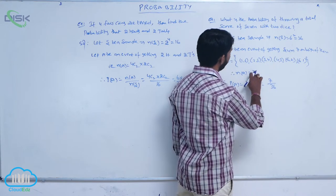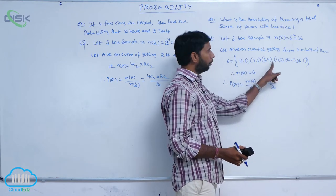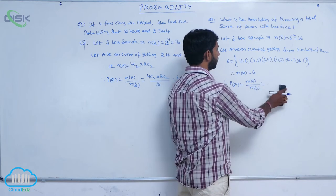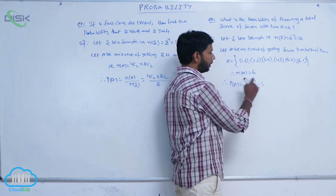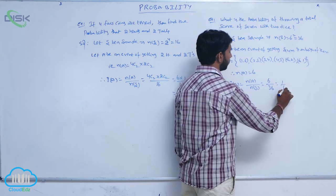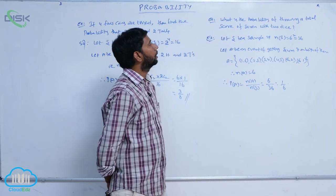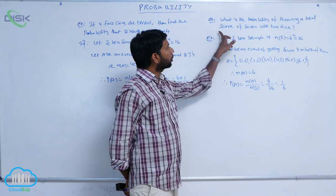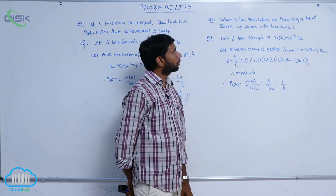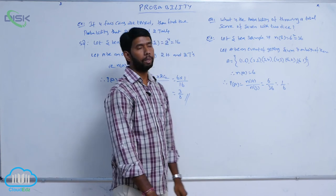Here n(A) is equal to 6, since the pairs summing to seven are (1,6), (2,5), (3,4), (4,3), (5,2), (6,1). So n(A) equals 6. P(A) equals n(A) by n(S), that is 6 by 36, which equals 1 by 6. The probability of scoring seven with two dice thrown is P(A) equal to 1 by 6.